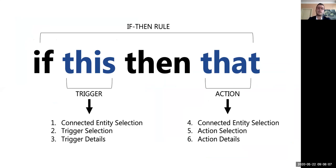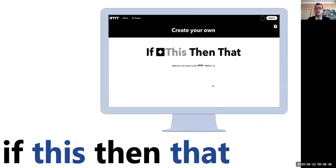Independently of the platform used, users must follow similar wizard-based procedures to define rules. Defining a rule means defining separately a trigger and an action to be linked together. To define the two parts of the rule, users must first select a generic connected entity to be involved, then select the specific trigger or action, and finally complete the trigger or action with any additional details. The video exemplifies such a rule definition process in If This Then That.